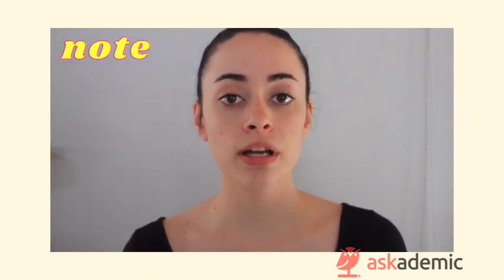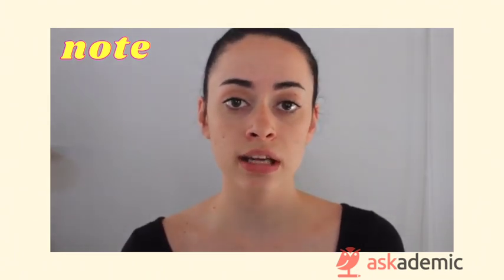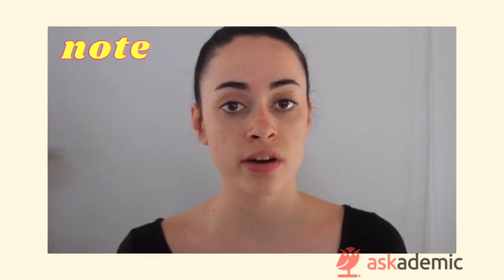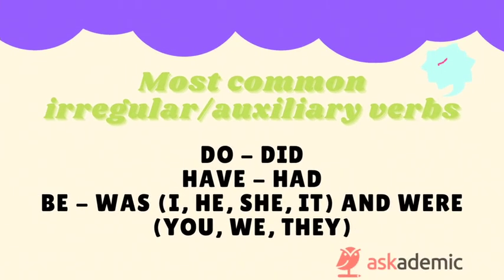The three most common irregular verbs in English that also act as auxiliary verbs are: do, did; have, had; be — was for subjects I, he, she, and it — and were for subjects you, we, and they.